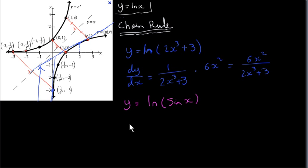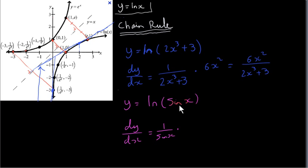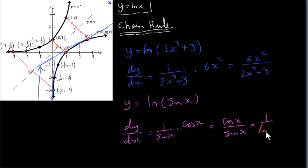Here's another example: for y equals ln of sin x, dy/dx is 1 over the argument — the argument is sin x — multiplied by the derivative of sin x with respect to x, which is cos x. So that equals cos x over sin x, which is equal to 1 over tan x, because tan x equals sin x over cos x.